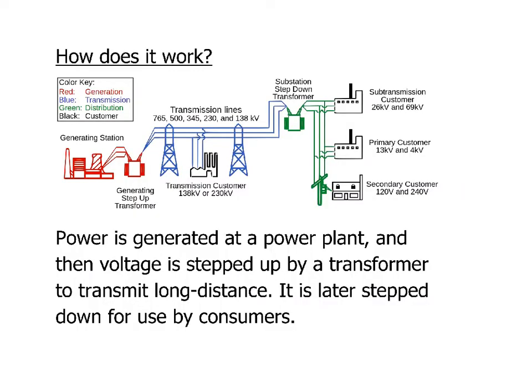We have a schematic diagram that shows what's going on in a hypothetical transmission system for sending power from the power plant to the people who use it. To summarize: power is generated at a power plant, then voltage is stepped up by a transformer to transmit it over a long distance. Later, when it gets closer to where it's actually going to be used by consumers, it is stepped down again by a different transformer — a step-up transformer, then a step-down transformer.